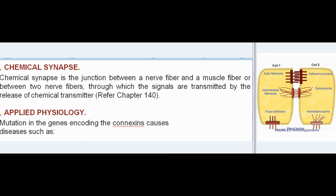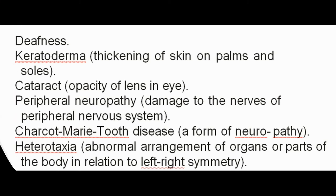Applied physiology — mutation in the genes encoding the connexins causes diseases such as: deafness; keratoderma (thickening of skin on palms and soles); cataract (opacity of the lens in the eye); peripheral neuropathy (damage to nerves of the peripheral nervous system); Charcot-Marie-Tooth disease (a form of neuropathy); and heterotaxia (abnormal arrangement of organs or parts of the body in relation to left-right symmetry).